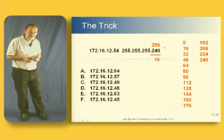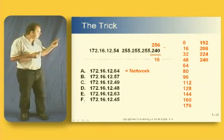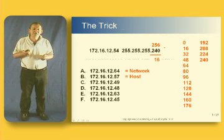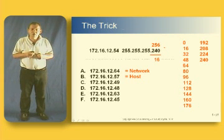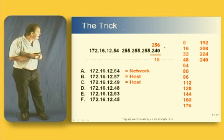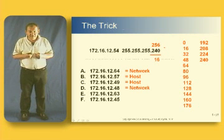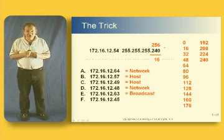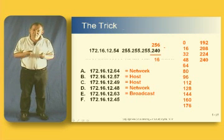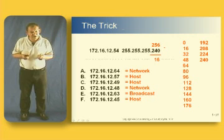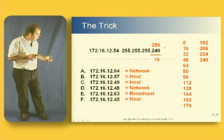Let's look down the list. First we've got .64 — as we can see from the list, that's a network address. The next one is .57: it lies between .48 and .64, so it's a valid host on subnet 48. .49 is also a valid host on subnet 48 — the next available IP address after the network address. .48 is the network address itself. .63 is a broadcast address — one address before .64. And .45 is also a host address, but on the previous subnet — subnet 32.